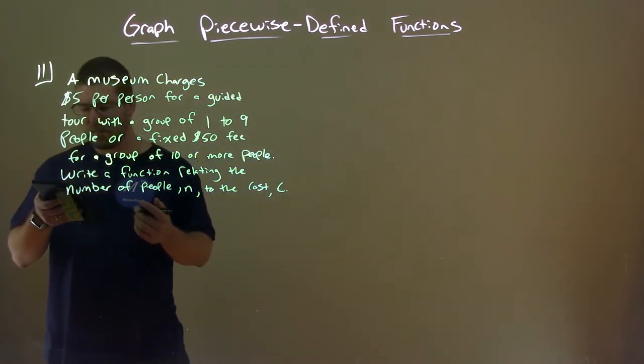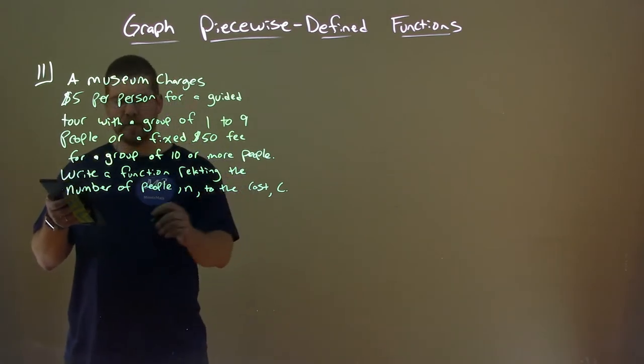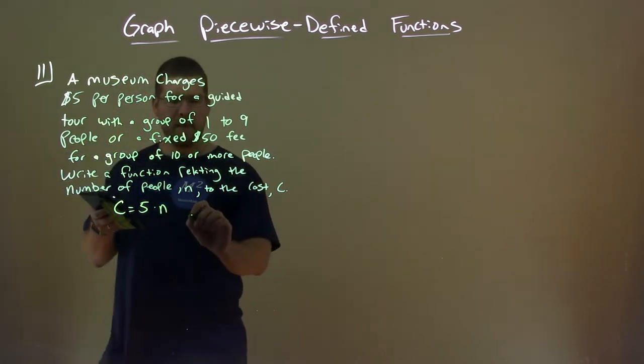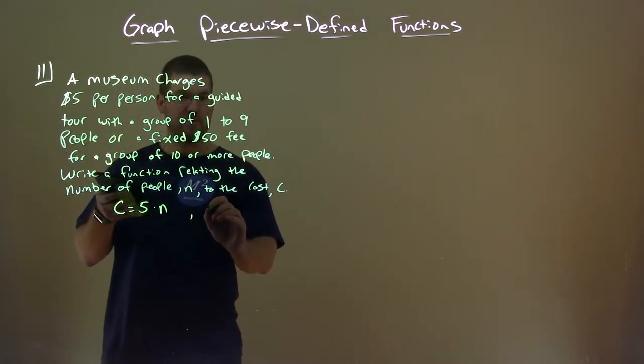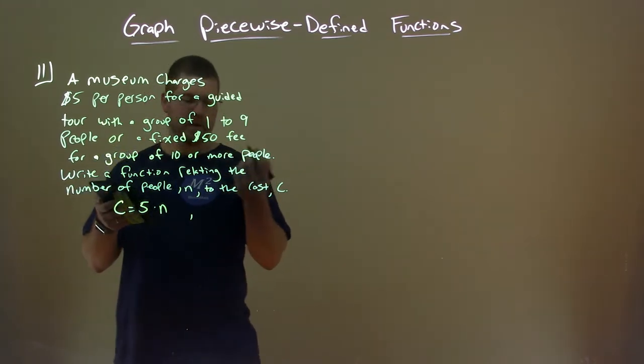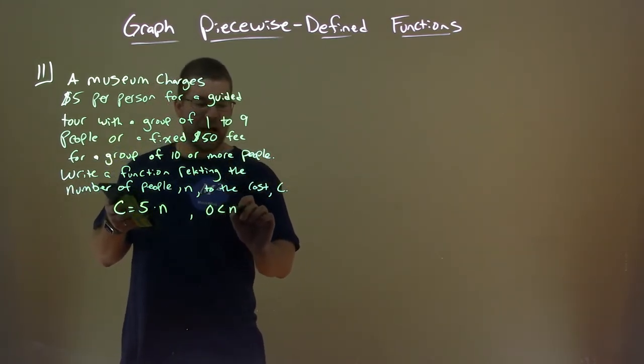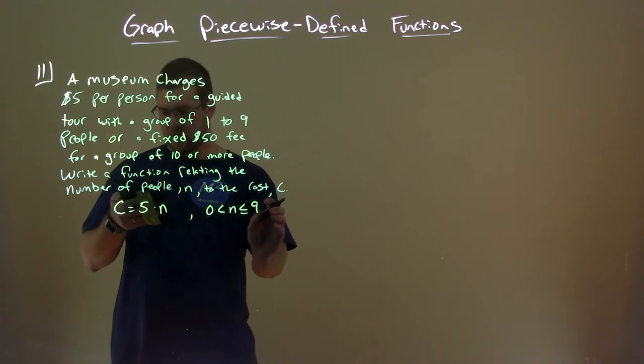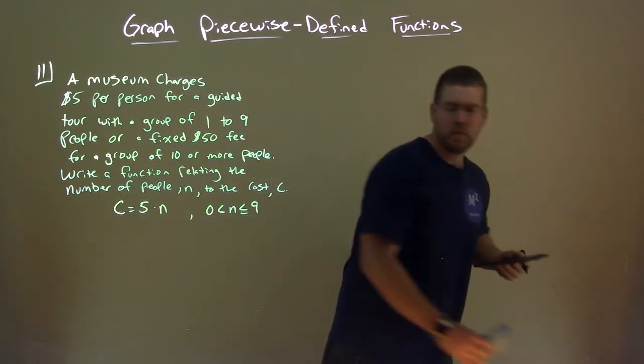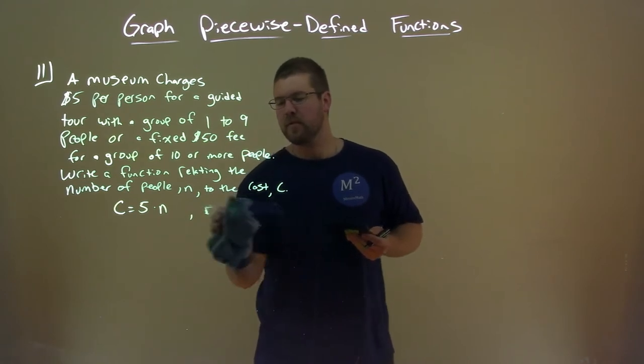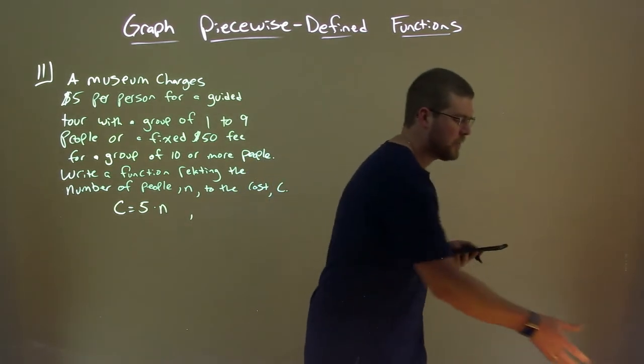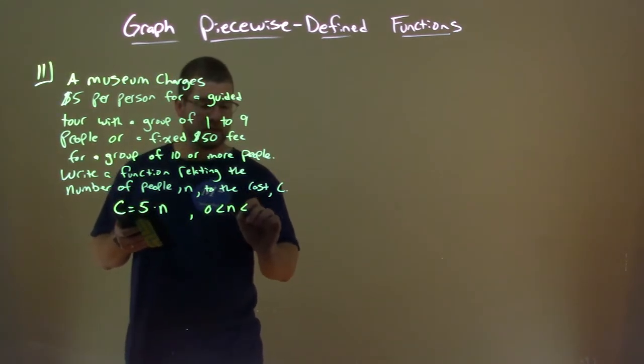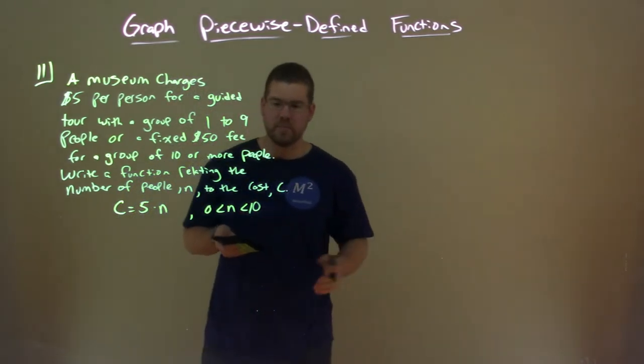Okay, so what do we have here? Well, for n values under 10, from 1 to 9, our cost is equal to $5 per person times the number of people. And that's for values from 1 to 9 people. There's a few ways you can write this. So 0 is less than n, which is less than 10. So all the way up to 10, but not including 10 people. But then they say our cost is just $50, flat fee, for anyone else, 10 or more. So if n is greater than or equal to 10.